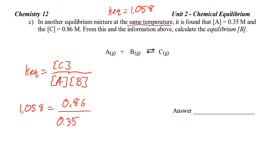Or, in other words, 1.058 equals concentration of C 0.86 over 0.35. And, then, we need to find what B is. So, I'm going to multiply both sides by 0.35. So, 1.058 times 0.35. 0.3703. And, that's going to be 0.86 over B.